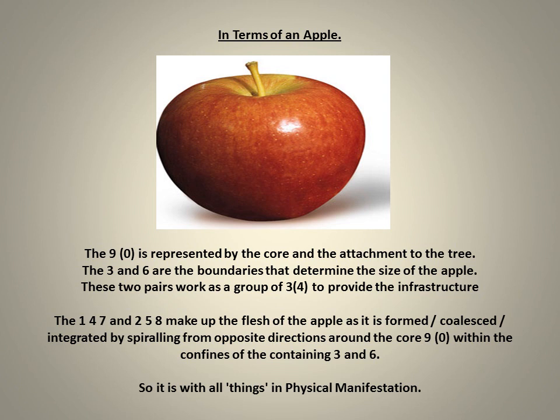The 9 is the central axis; the 3 and the 6 are the boundaries that contain and confine; the 1-4-7 and 2-5-8 family number groups are controlled by prime numbers. Using an apple as metaphor: the 9 is represented by the core and the attachment to the tree; the 3 and 6 are the boundaries that determine the size of the apple; the 1-4-7 and 2-5-8 make up the flesh of the apple, formed by spiralling from opposite directions around the core. The 3, 6, and 9 are the conduit for the 1-4-7 and 2-5-8, in the same way as pipework in a house is the conduit that carries water to different locations.